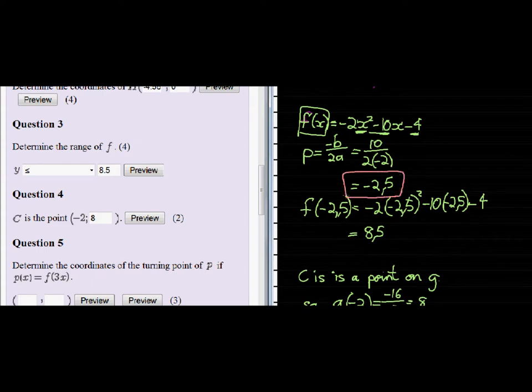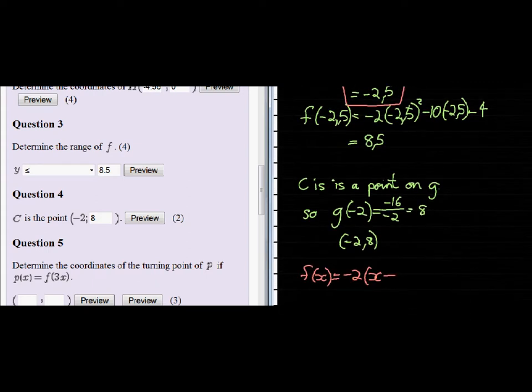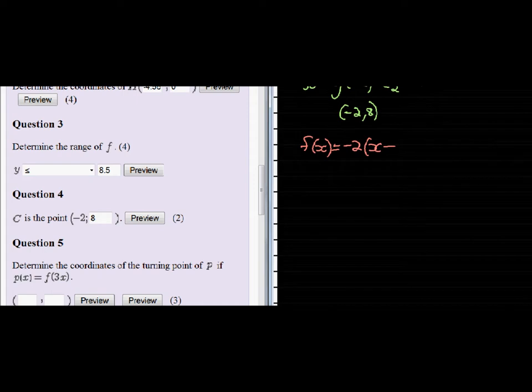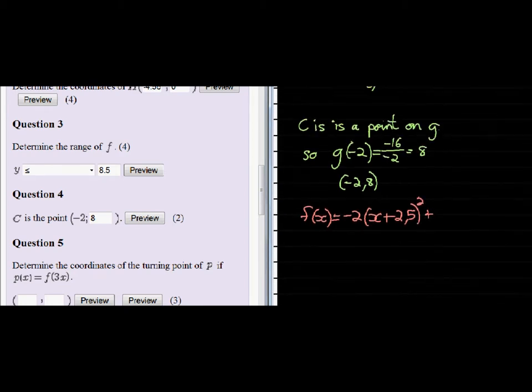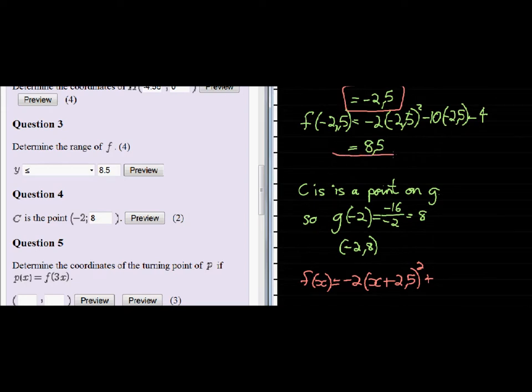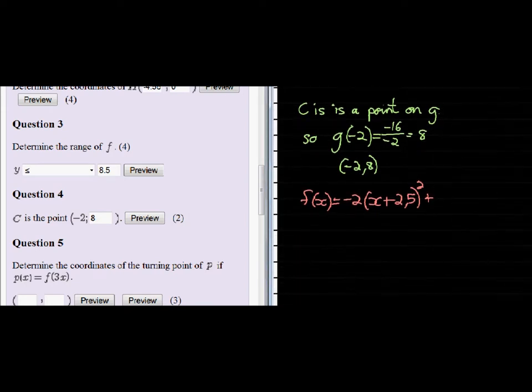It was negative 2.5. So negative, negative gives me positive 2.5 squared plus the Q value was the maximum value. If we go up we found the maximum value to be 8.5. So plus 8.5. This is a different way of expressing the function or the parabola of F.